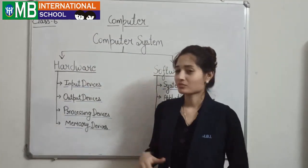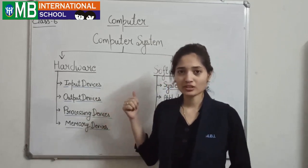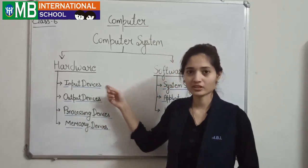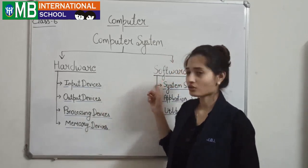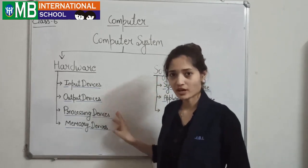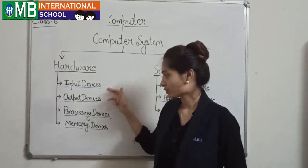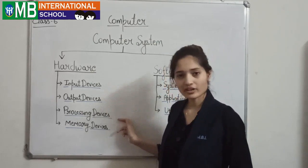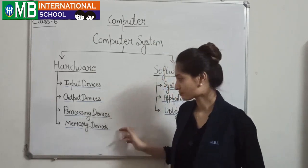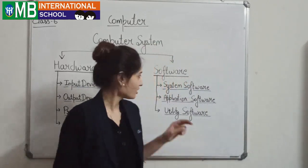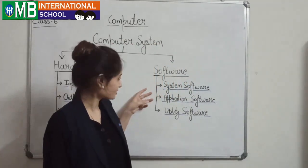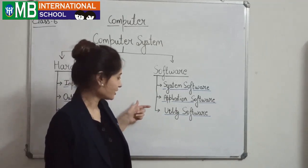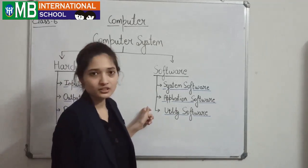Now we discuss about the computer system. A computer system has two parts: hardware and software. Hardware has four parts: input device, output device, processing device, and memory device. Software has three parts: system software, application software, and utility software.